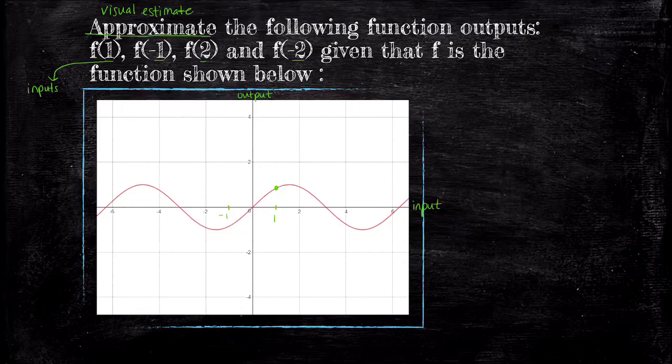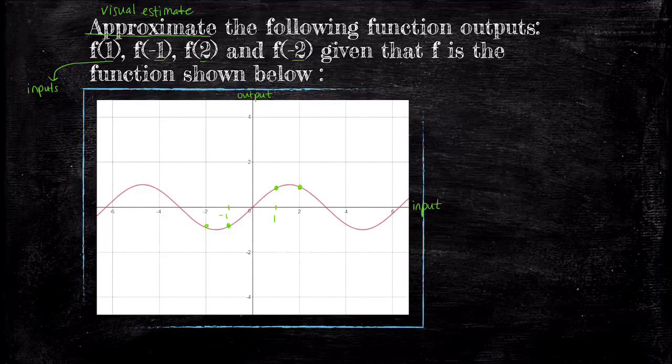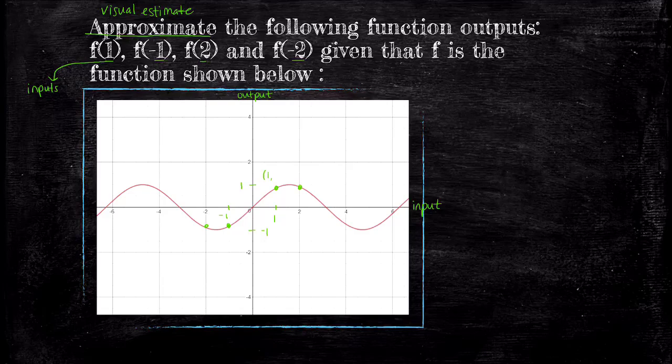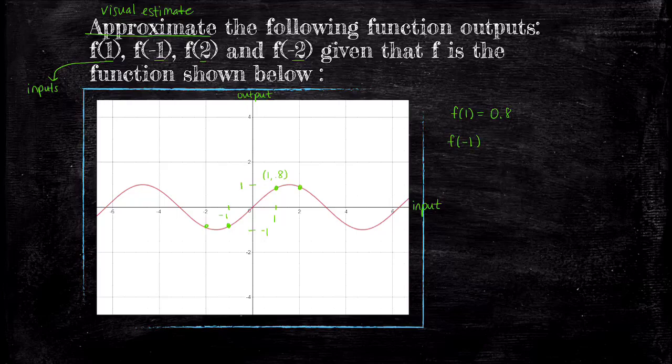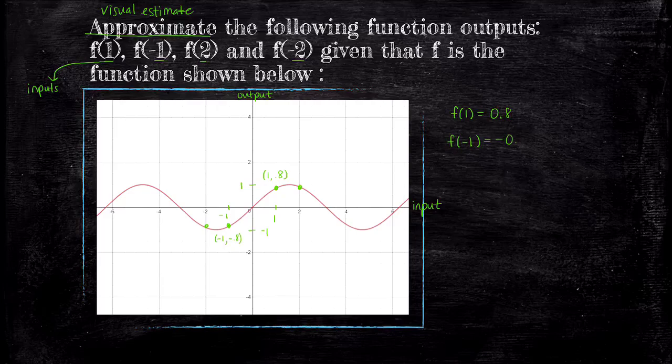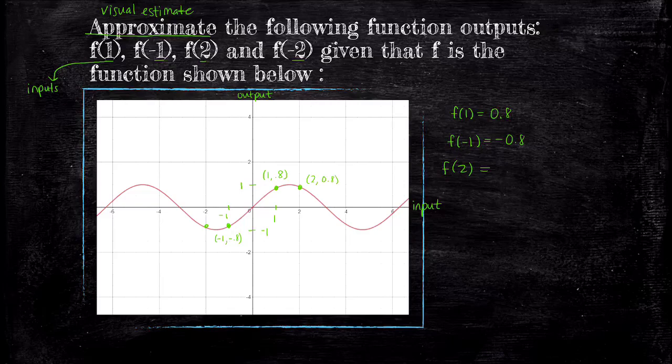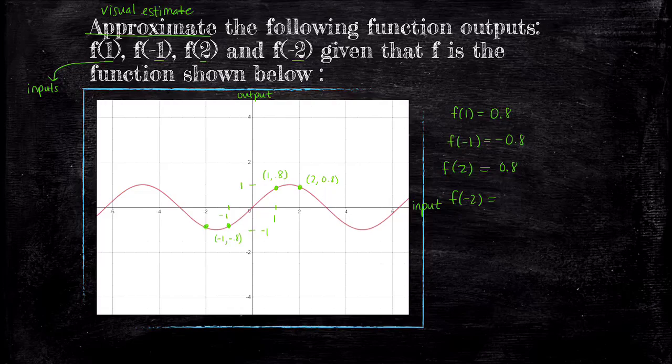To find the output that goes with input x equals 1, we find the point that has x-coordinate 1. We look at the scale of our axes and see that each grid represents 0.5. So it looks like the point 1, 0.8. Thus f of 1 is 0.8. For x equals negative 1, we see the point negative 1, negative 0.8. For f of 2, we see it's about 0.8. You try to find f of negative 2. That's right, f of negative 2 is negative 0.8.